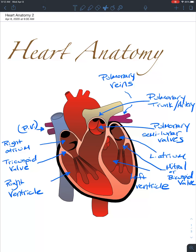From the left ventricle, blood is going to be ejected from the heart through the aorta, which is the largest artery in the body. That's going to pump blood throughout the whole systemic circulation. Arteries will diverge and split off the aorta along its course, and we can see immediately off the top here there are three arteries coming off of the aorta.